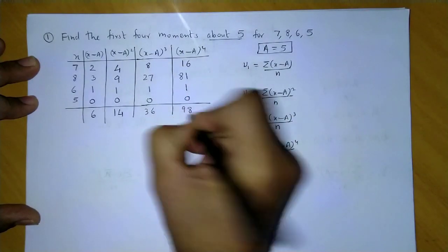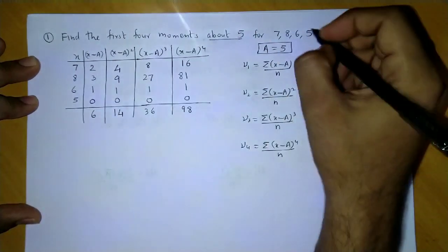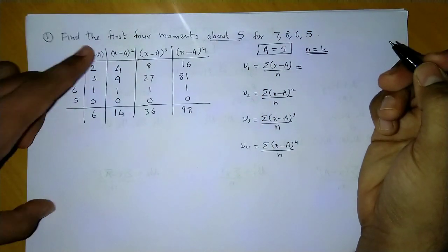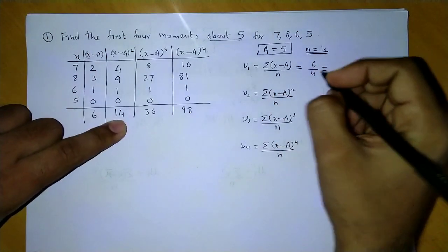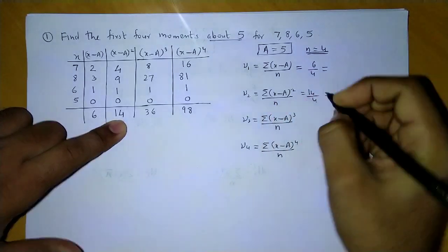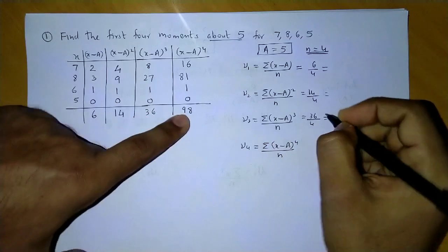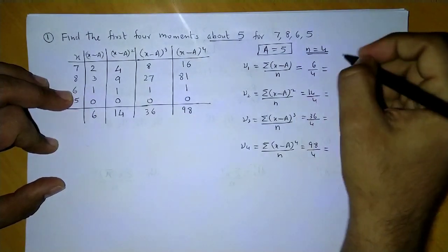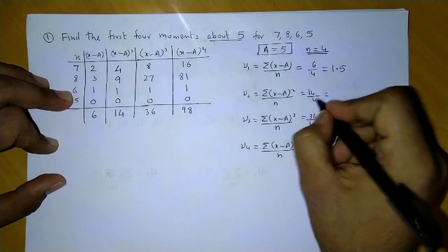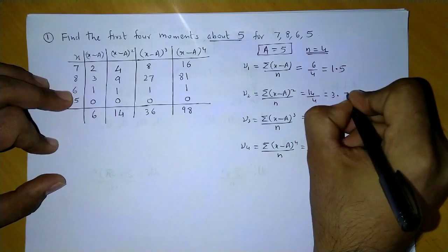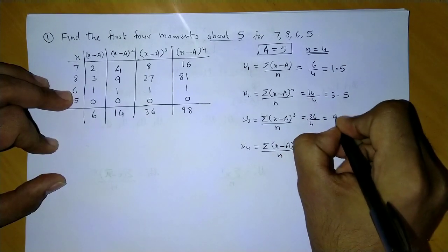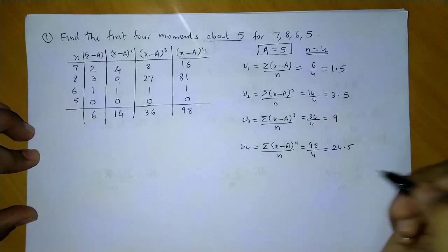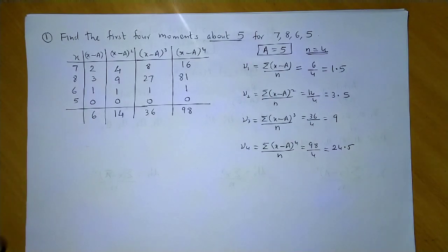So this will be 98. Now if you observe, there are 4 observations, so the number of observations here is 4. So let us find the arbitrary moments. First: 6 divided by 4 is 3 by 2, which is 1.5. This is 14 divided by 4, which is 7 by 2, so this will be 3.5. This third answer is 36 divided by 4, which is 9. And the last answer is 98 divided by 4, which is 24.5. So this is how you calculate the arbitrary moments for raw data.